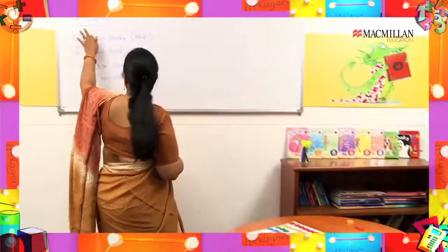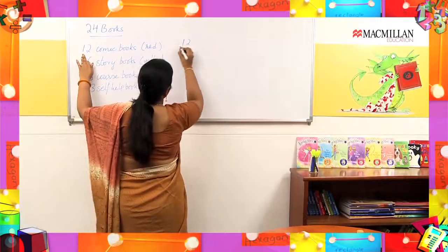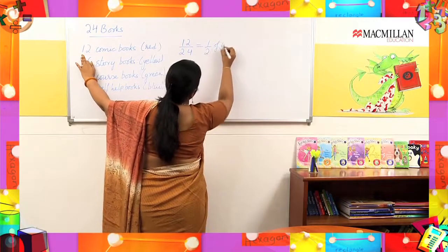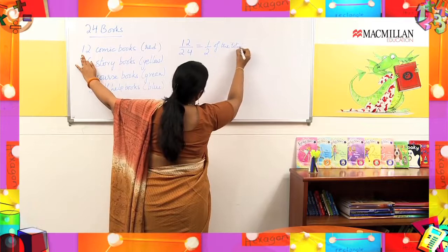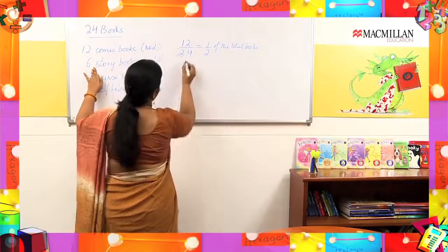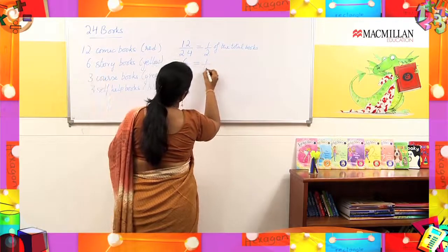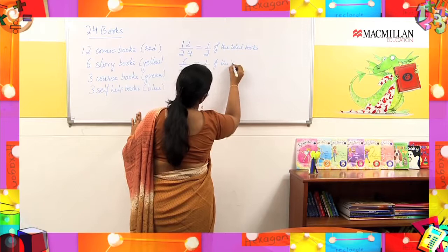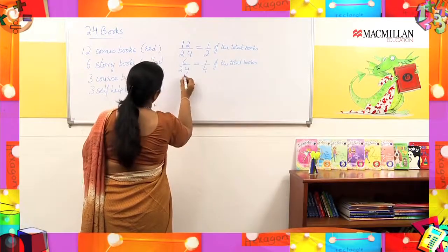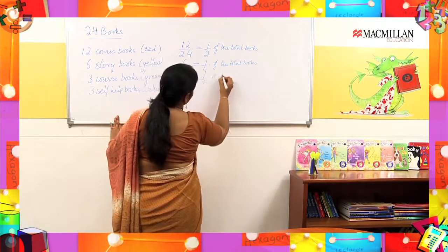There are a total of 24 books, out of which 12 are comic books. So that means 12 by 24 — that is 1 by 2 — of the total books are comic books. The same way, I have 6 story books, so 6 by 24 — that is 1 by 4 — of the total books are story books. And 3 by 24 — that is 1 by 8 — of the total books are course books.